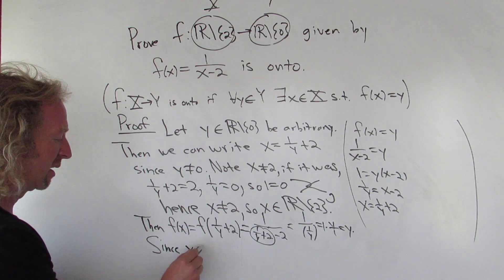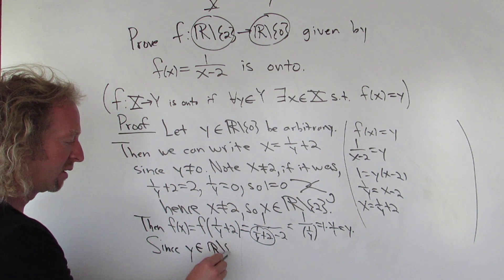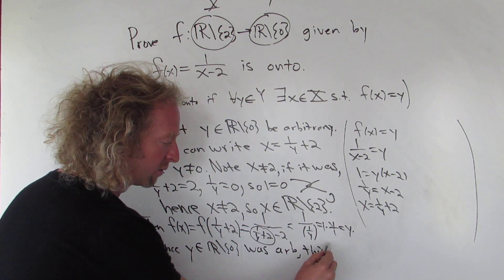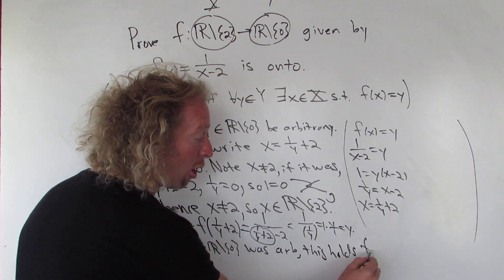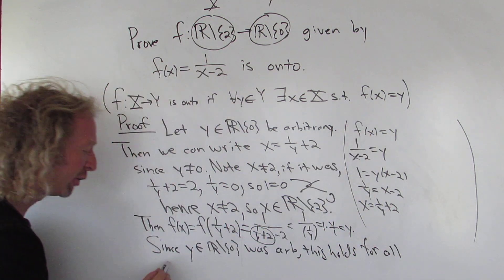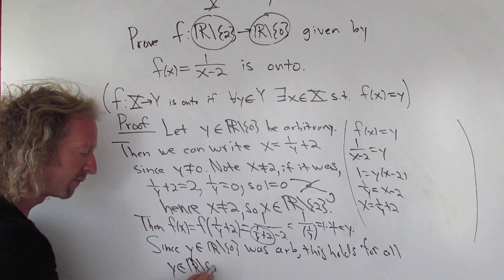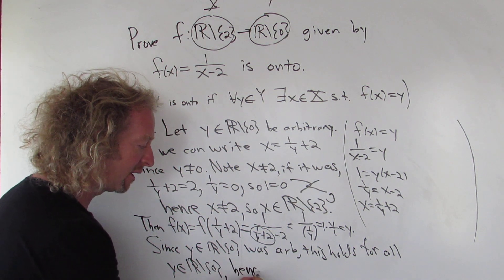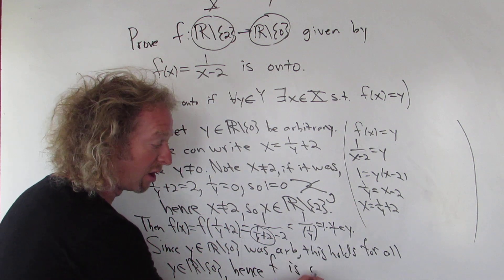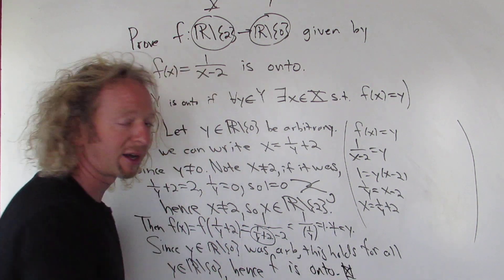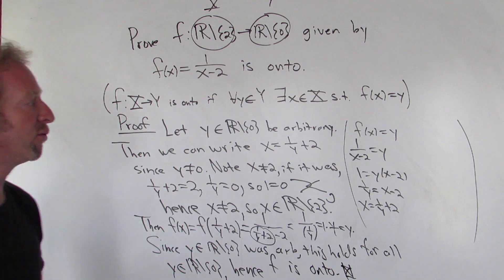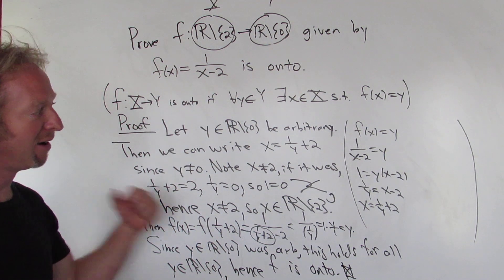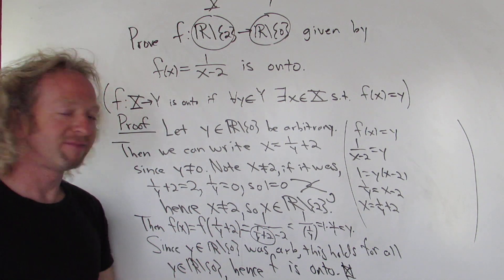Since y in this set was arbitrary, this holds for all little y in the codomain — hence f is onto, is a surjection, and that completes the proof. So that's a formal proof. Hopefully someone out there is working on this stuff — if you are, awesome — and hopefully that makes sense. That's it!